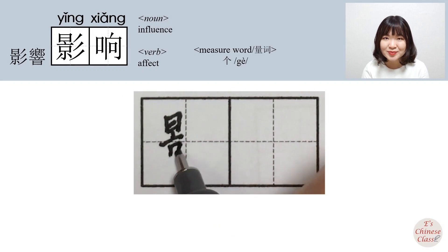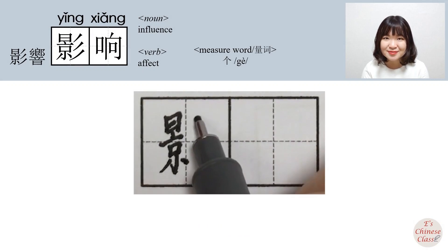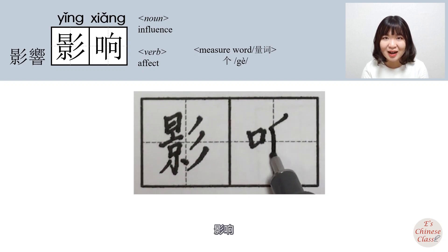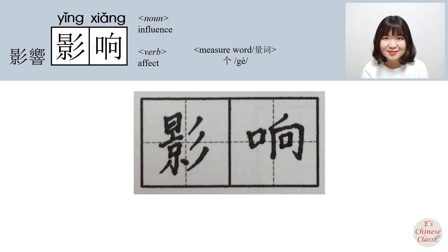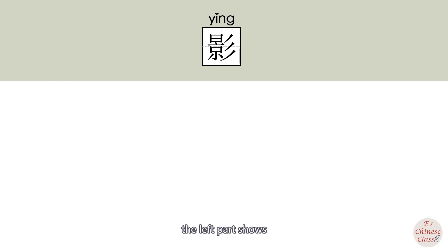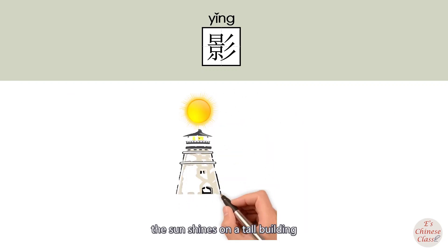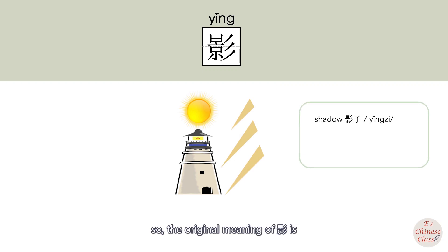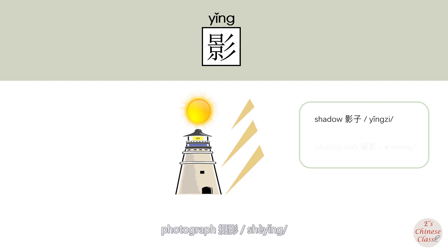影响. The right part shows the shadow of the building. So the original meaning of 影 is shadow. The extended meaning is photograph. 摄影.